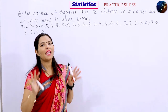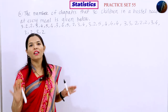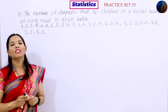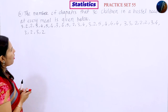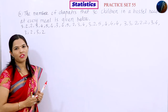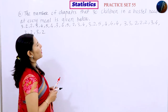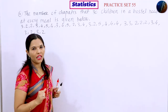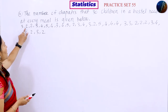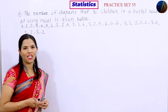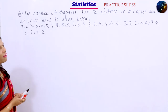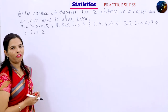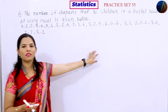Students, this is the last example in Practice Set 5.5, completing 7th standard Mathematics syllabus. The example says: the number of chapatis that 30 children in the hostel need at every meal is given below. Some children need 2 chapatis, some need 5 chapatis. We have to prepare a frequency table.